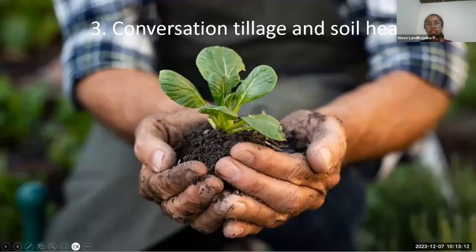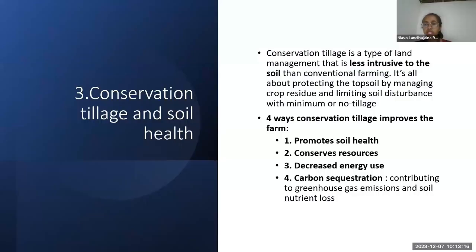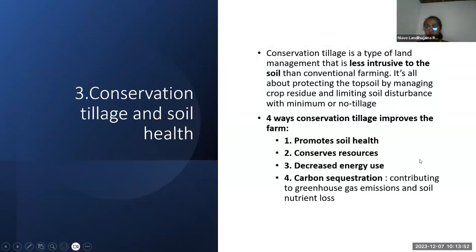The next part is conservation tillage and soil conservation. Conservation tillage means the type of land management that is less intrusive to the soil than conventional farming. It is all about protecting the topsoil by maintaining residue and limiting soil disturbance with minimum or no damage. There are four ways of conservation: to promote soil health, conserve resources, decrease energy use, and for carbon sequestration — to reduce greenhouse gas emissions and soil nutrient loss.